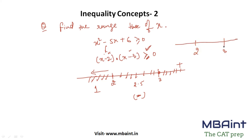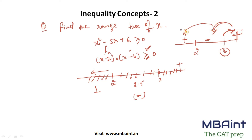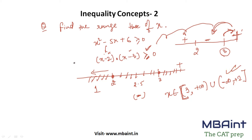So follow the pattern: here we had 3 and here 2, so it alternates. Any value at the right extreme always gives positive. Then alternating: positive, then negative, then positive again — it keeps alternating. So whatever is at the right extreme is always positive, then negative, then positive, and so on. Here the intention is to get greater than or equal to 0, so: x belongs to [3, +∞) — 3 is included — union (−∞, 2] — 2 is also included. That is your required solution.